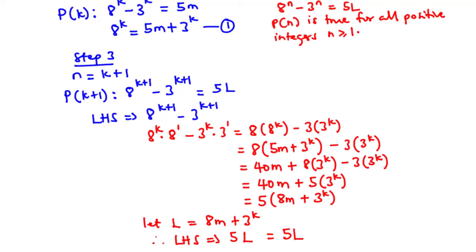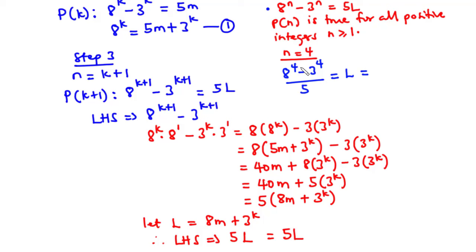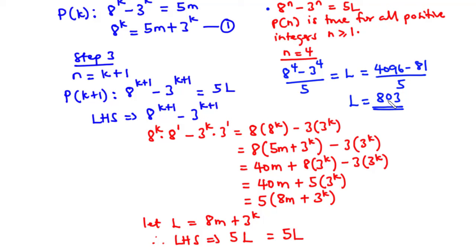We can test our solution by substituting any value of n into the original equation. Let's assume n equals 4. From the original equation: (8^4 minus 3^4) divided by 5 should equal some integer l. Now 8^4 is 4096 and 3^4 is 81, so (4096 minus 81) divided by 5 gives l equals 803. Therefore P(n) is true for all positive integers n greater or equal to 1.